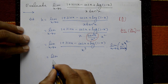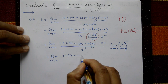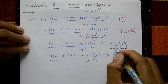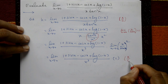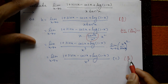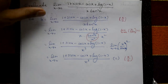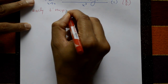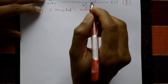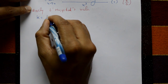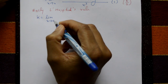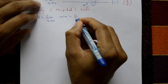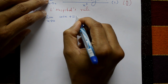So k equals the limit as x→0 of (1 + sinx - cosx + log(1 - x)) divided by x³, which is still 0 by 0 form. Apply L'Hôpital's rule: differentiate the numerator — derivative of 1 is 0, derivative of sinx is cosx, derivative of -cosx is +sinx.